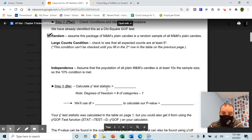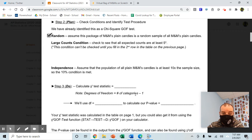You've already found your test statistic. Then you'll find your degrees of freedom and your p-value. Degrees of freedom is just the number of categories minus one.